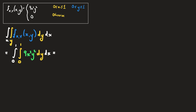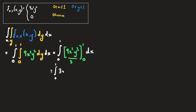Integrating with respect to y: 9x² is a constant multiplier, and y² raised to a power becomes y³ divided by the new power. This gives the integral from 0 to 1 of 9x²y³/3 evaluated between y=1 and y=0, integrated with respect to x. Substituting the limits: 9/3 becomes 3, and 1³ minus 0³ is 1, giving us the integral from 0 to 1 of 3x² dx.